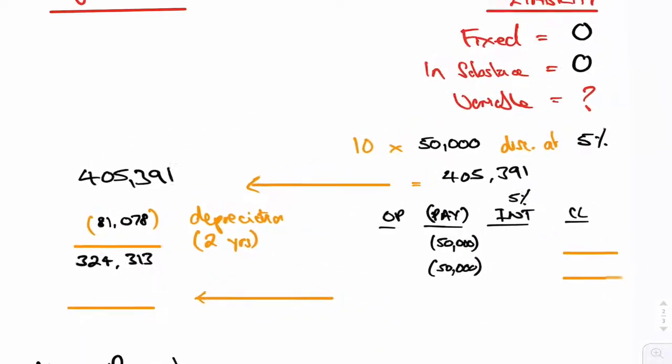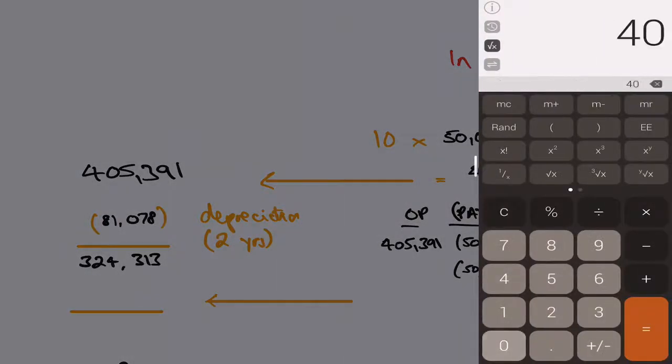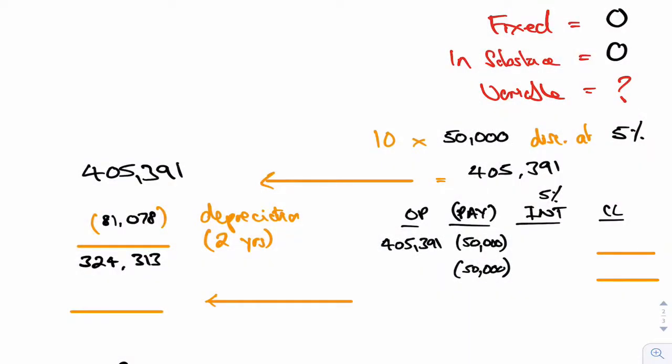Now let's go deal with the lease liability side then. So the opening is that 405,391. Take off 50,000 because it's in advance. Then you add on the interest of 5%, 17,770 with a bit around it. Add all that across then and you'd get 373,161. That's the end of year one.